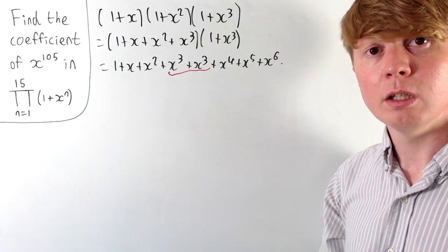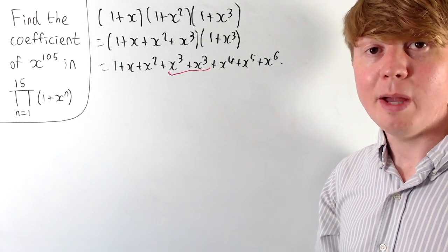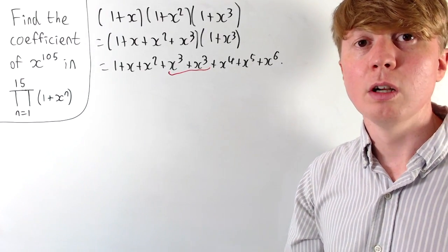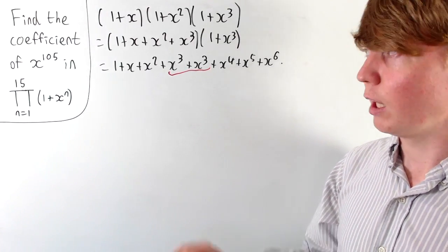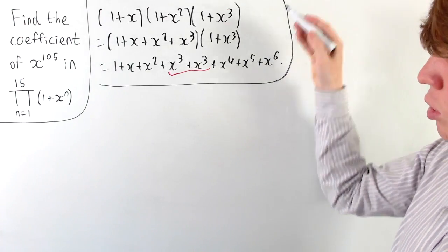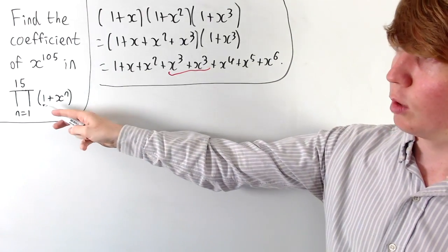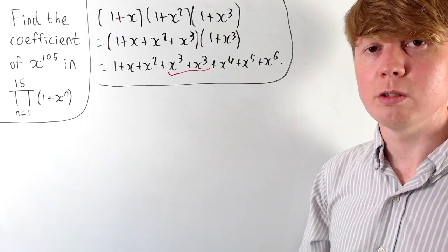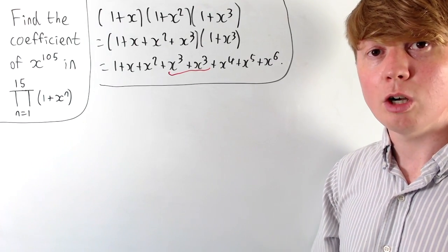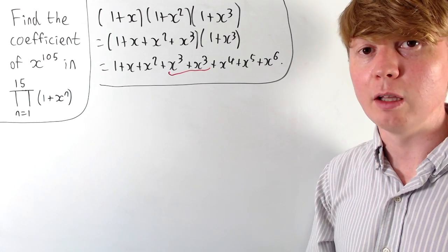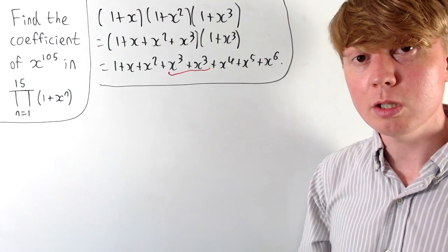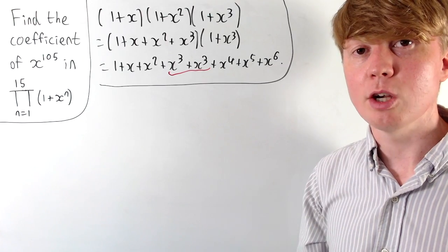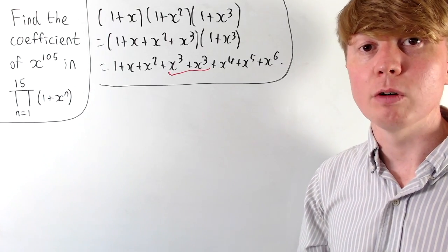This principle applies all the way up to the product where n is 15. So the number of ways that we can make a power of 105 is going to give us the coefficient of x to the power of 105. This is because the coefficient of each term — 1 and powers of x — is just 1. So to find the final coefficient of x to the 105, we just need to count the number of ways there are to multiply terms together to get a power of 105.